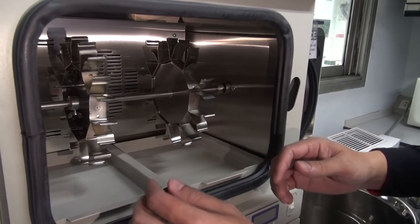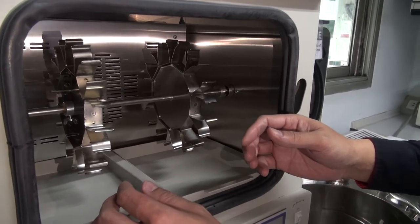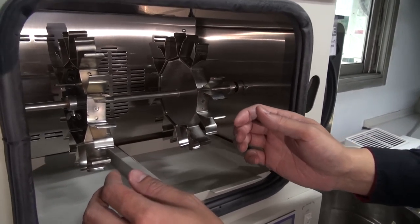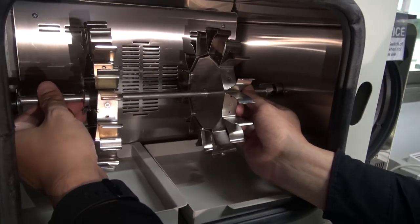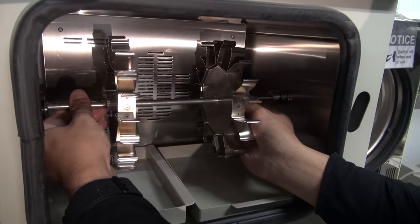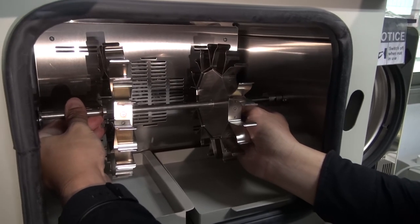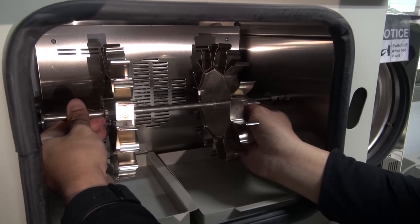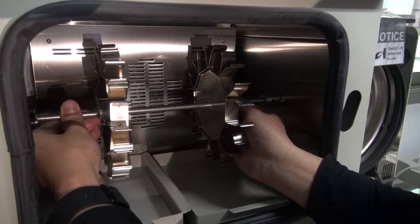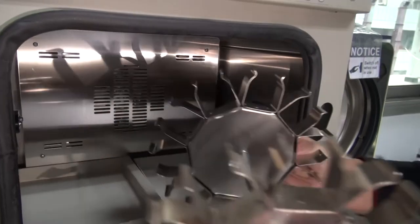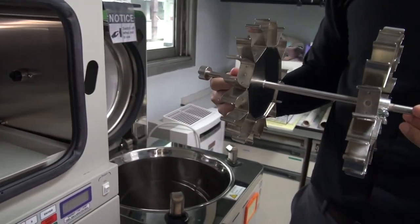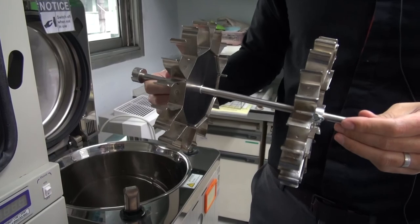To remove bottle carousel assembly from the unit, press the shaft of the carousel against the right side. Then simply pull the left shaft out from the holder and then take the whole assembly out of the unit as shown here.